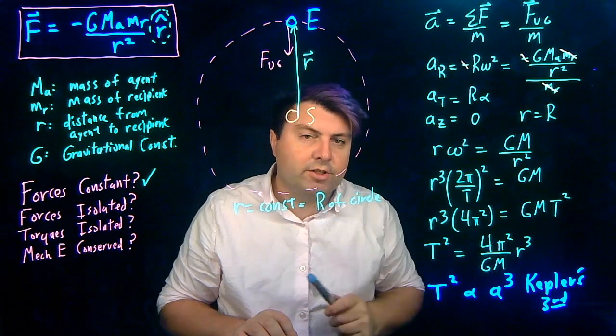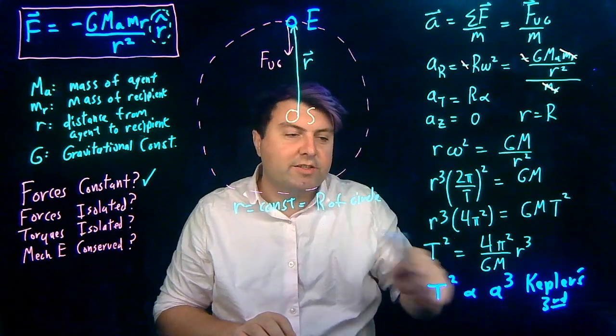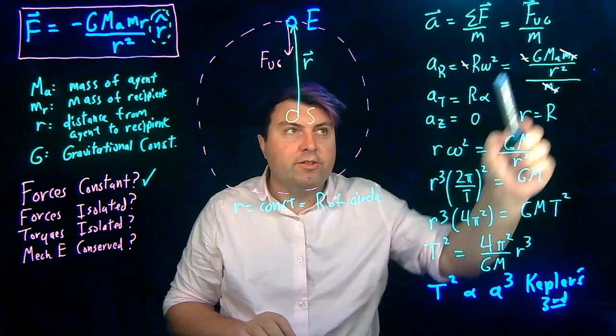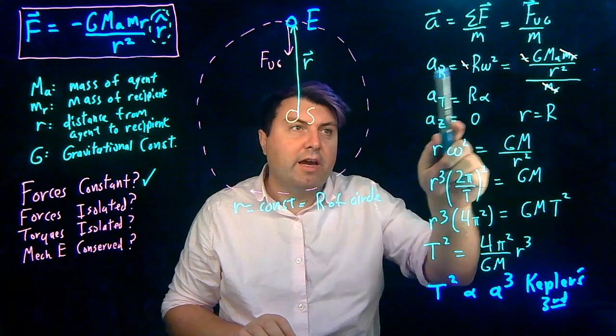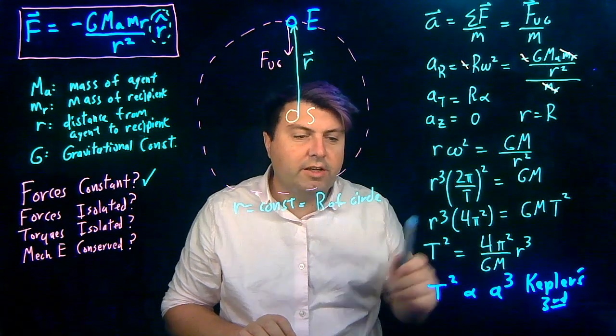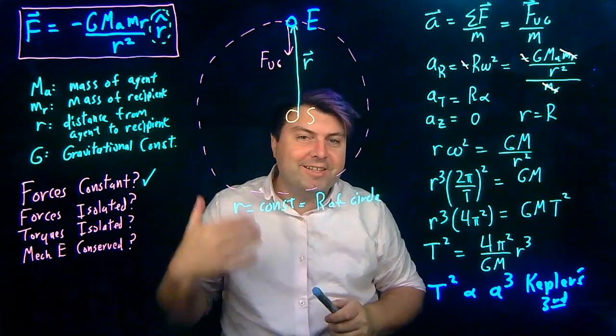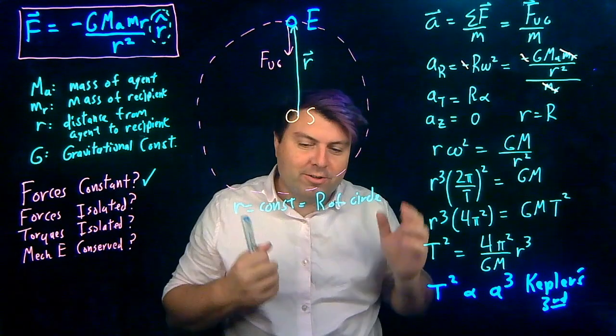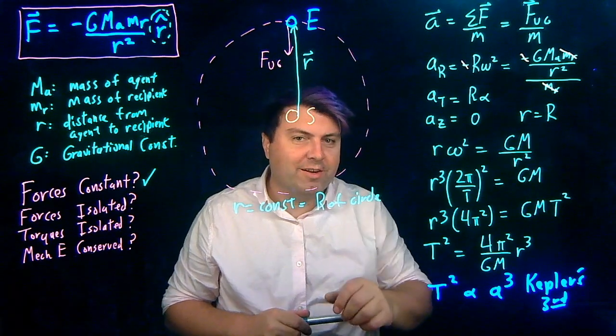So what we've done is we've found for a circular orbit, where a is just equal to r and we don't have too much craziness, we are able to very quickly just using Newton's second law and our acceleration constraints get to Kepler's third law. So we're going to see a lot of other things that we can do once we start getting weird, but this is a very good place to start.